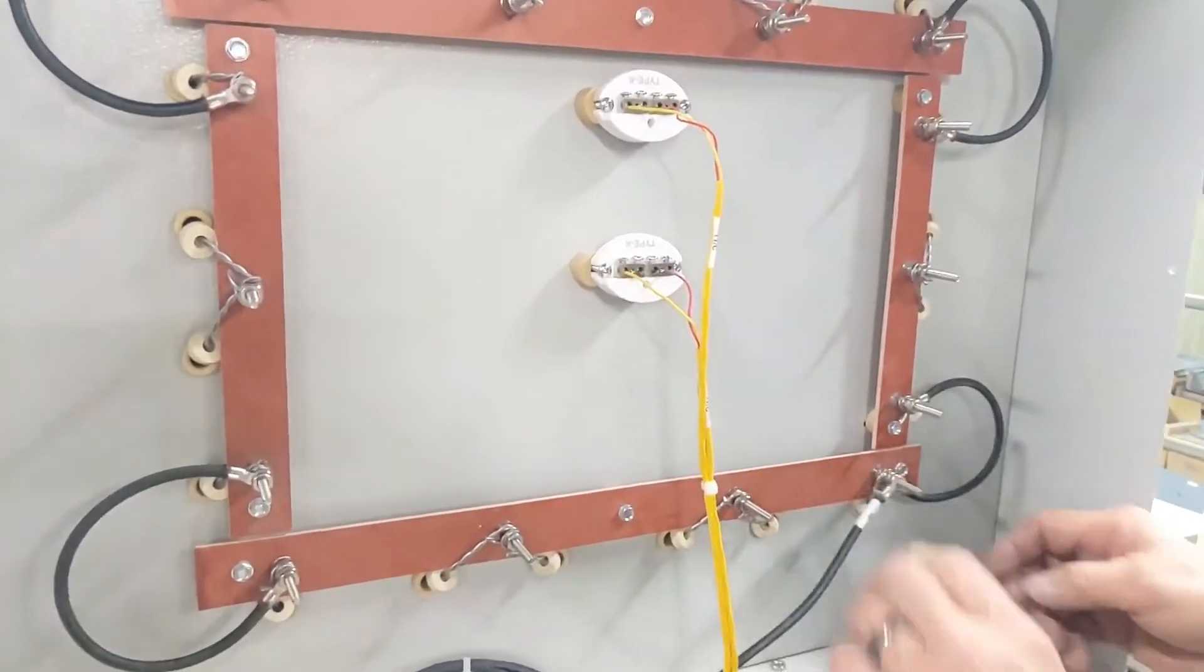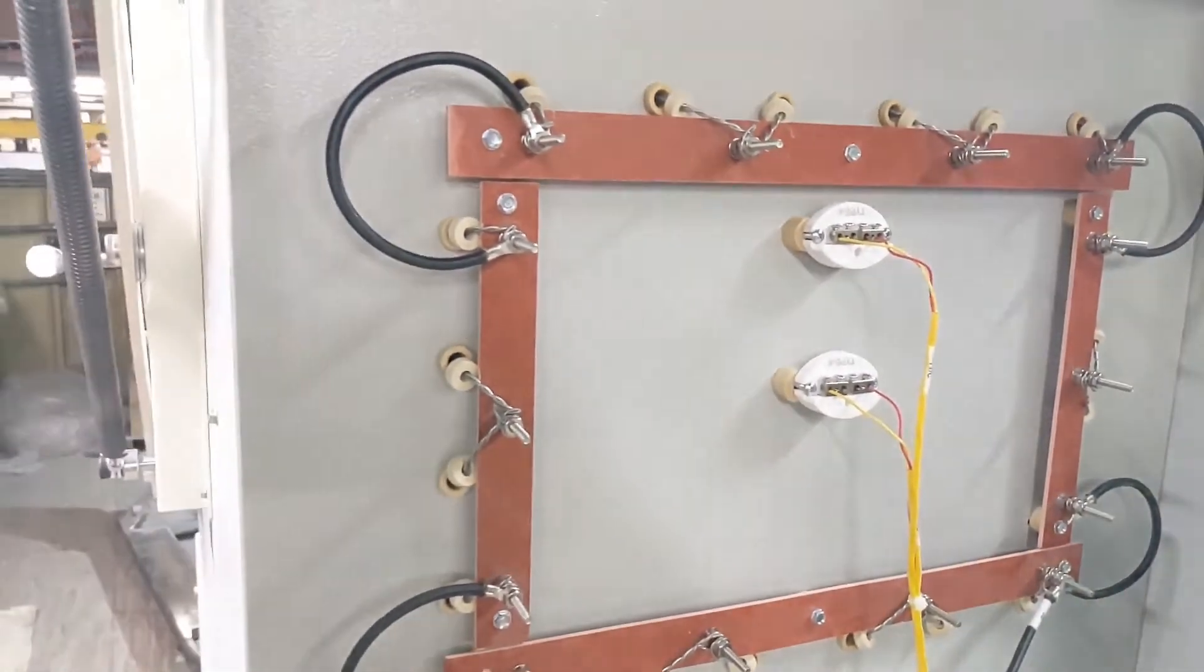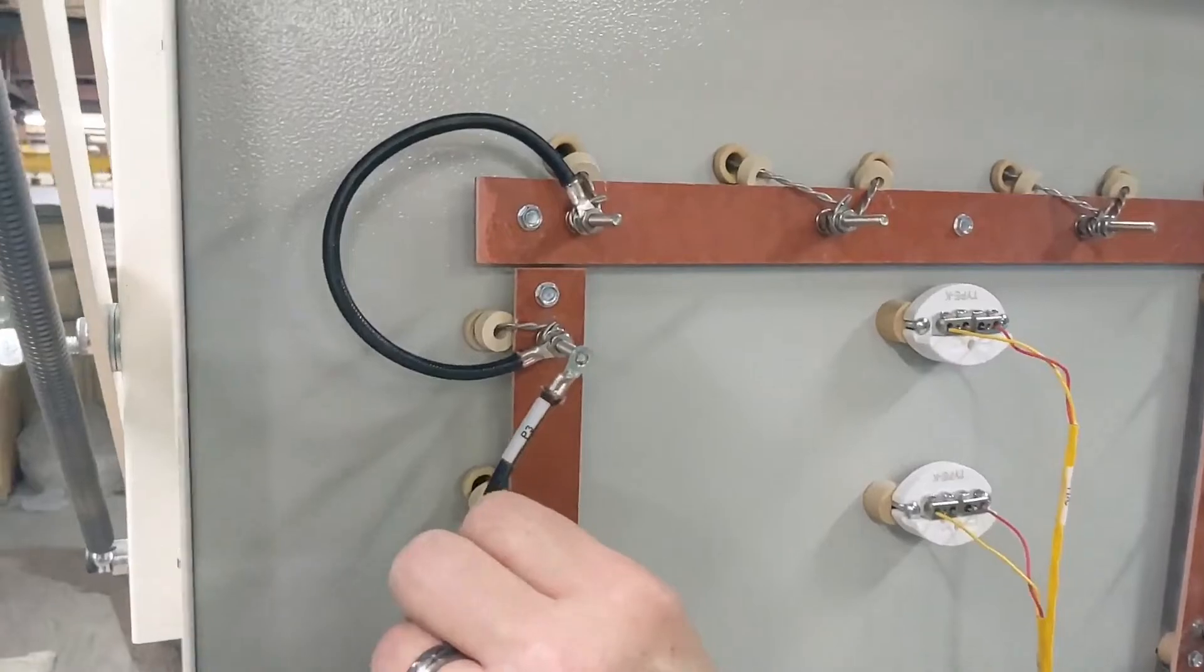The final step here is to install the element power wires on the terminals that are shown. And these again are held in place with number 10 hex nuts.